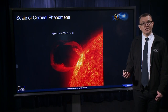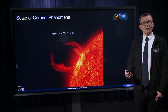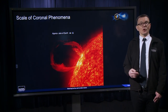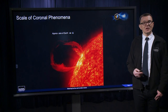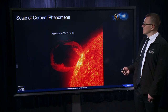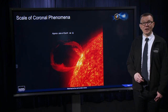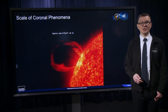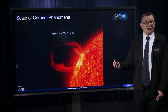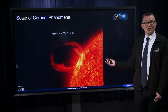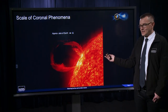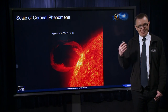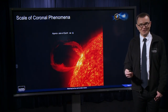This image, taken in ultraviolet light, shows the scale of the phenomenon compared to the size of the Earth. The Earth is a tiny thing compared to the size of the sun. Of course, the Earth is much further away from the sun in reality — this is just for perspective.